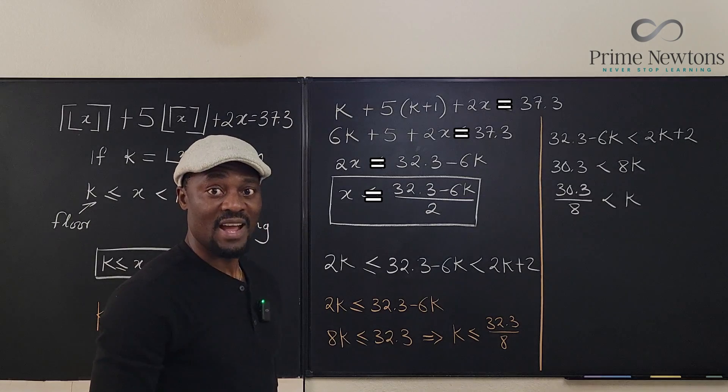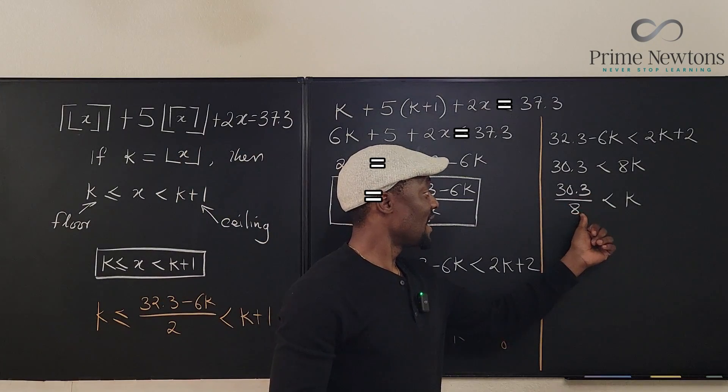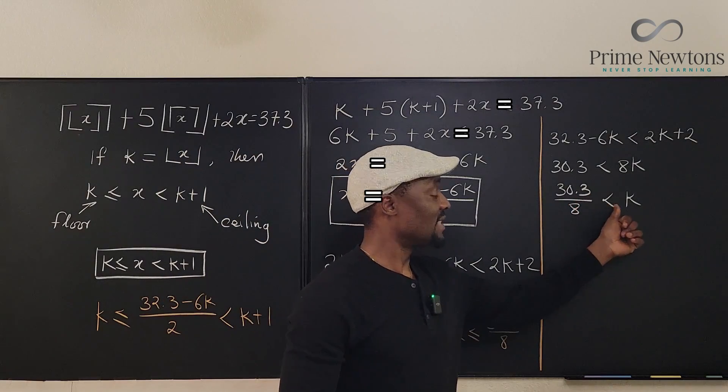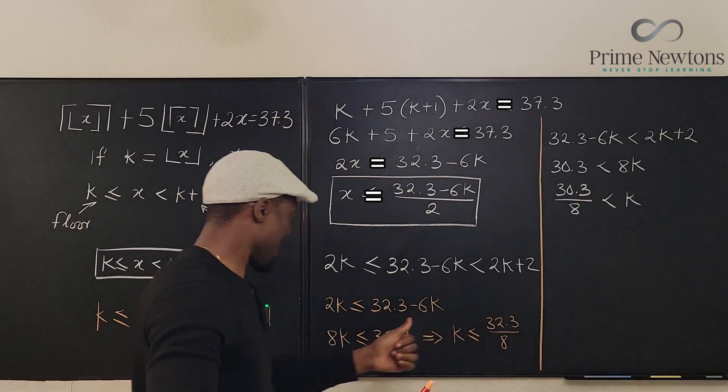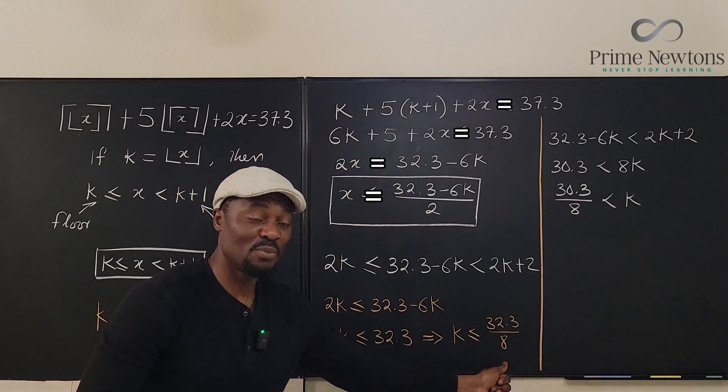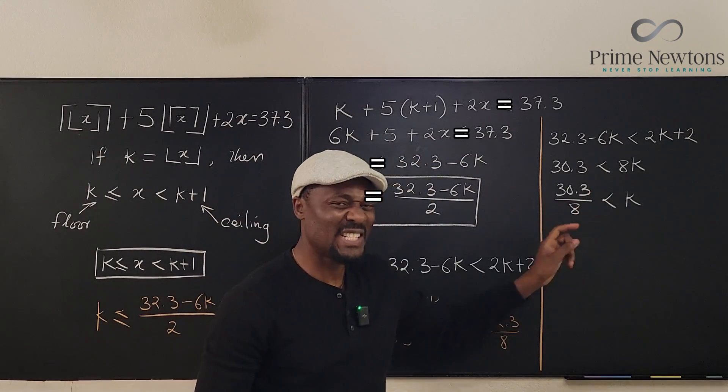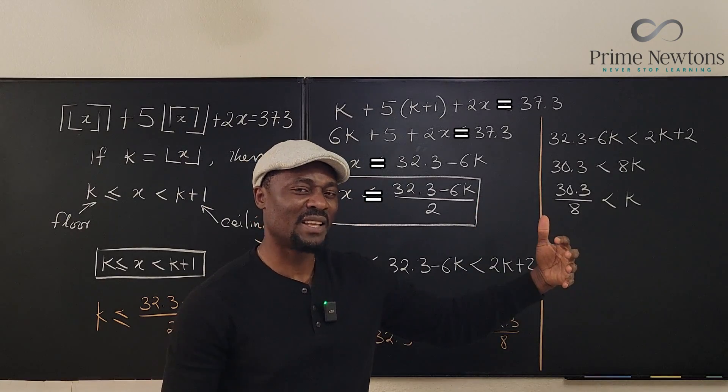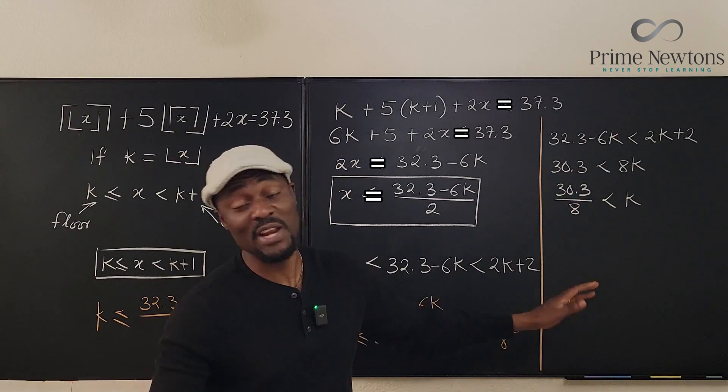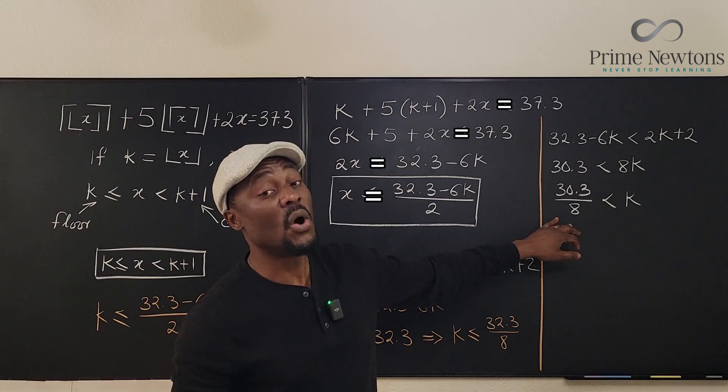If we move the k's around, move this here and bring this here, we're going to end up with 30.3 is less than 8k, which tells you that 30.3 over 8 is less than k. Nice. So 30.3 over 8 is less than k, and k is less than 32.3.